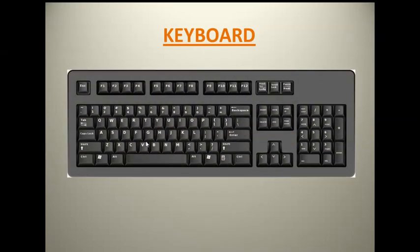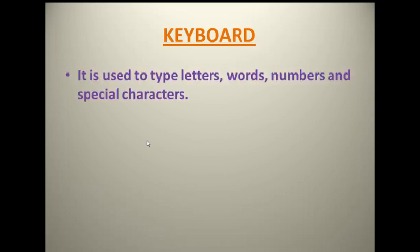The third main part is keyboard. This is how the keyboard looks like — you can see there are so many keys on it. In a standard keyboard there are 104 keys. With the help of those keys we can type letters, words, numbers, and special characters.